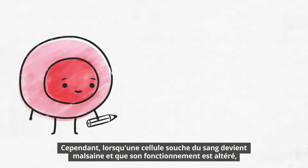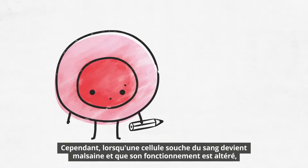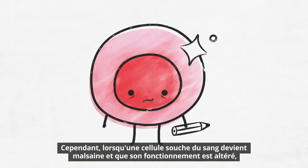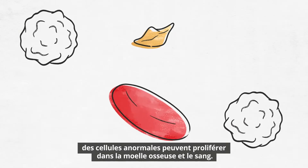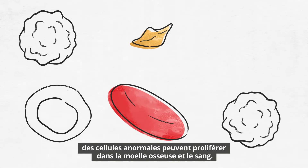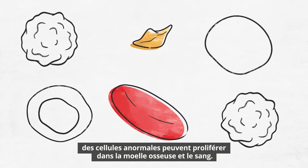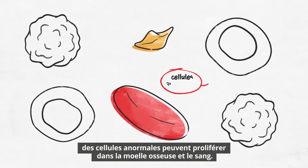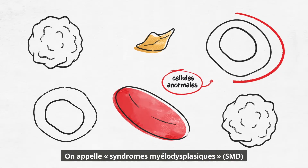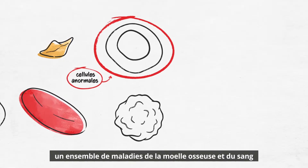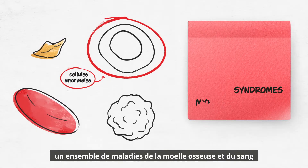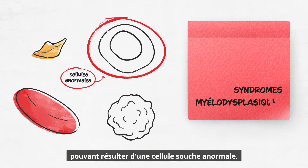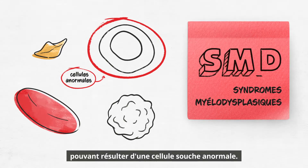However, when a blood stem cell becomes diseased and doesn't function like it should, abnormal cells can fill the bone marrow and blood. One group of bone marrow and blood diseases that can result from an abnormal stem cell is the myelodysplastic syndromes, MDS.